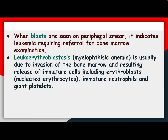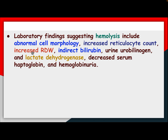When blasts are seen on peripheral smear, it indicates leukemia requiring referral for bone marrow examination. Leukoerythroblastosis, or myelophthisic anemia, is usually due to invasion of the bone marrow resulting in release of immature cells including erythroblasts, nucleated erythrocytes, immature neutrophils, and giant platelets. Laboratory findings suggesting hemolysis include abnormal cell morphology, increased reticulocyte count, increased RDW, increased indirect bilirubin, urine urobilinogen, and lactate dehydrogenase, and decreased serum haptoglobin and hemoglobin.